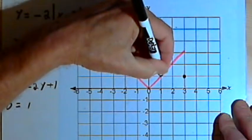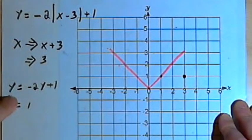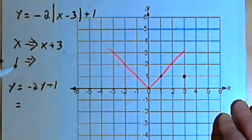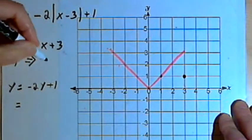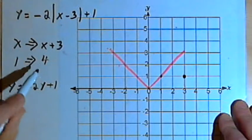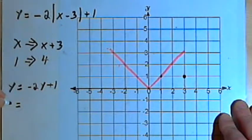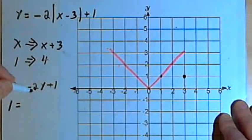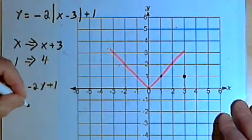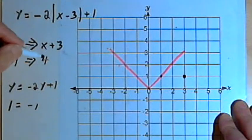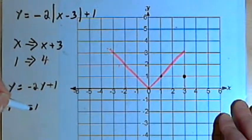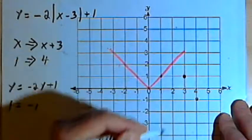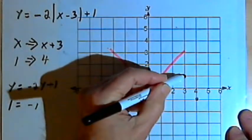Now let's take another point. Let's take this point 1, 1. For the x-coordinate 1, I add 3 to get 4. For the y-coordinate, also 1, I multiply it by negative 2 to get negative 2, plus 1 gives negative 1. So I should have a point at 4, negative 1. And now I can connect these two points.